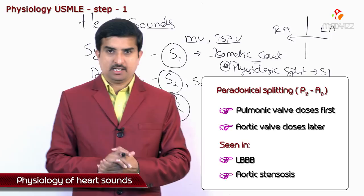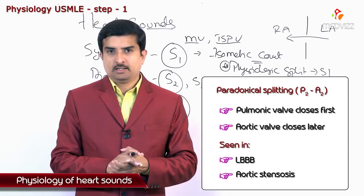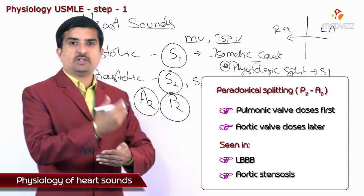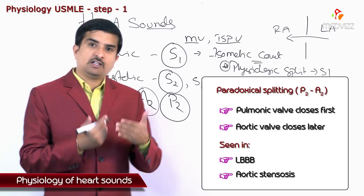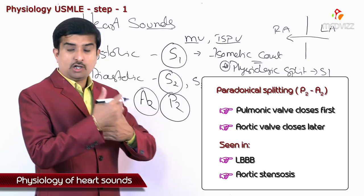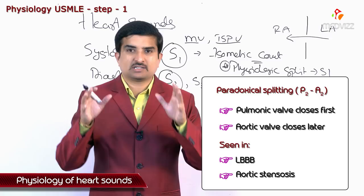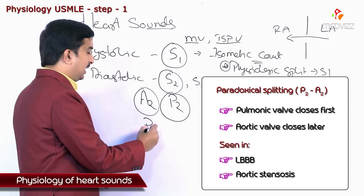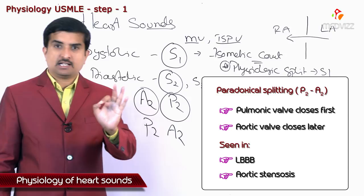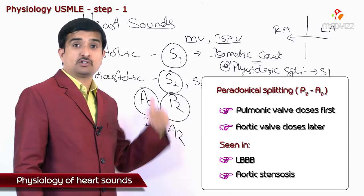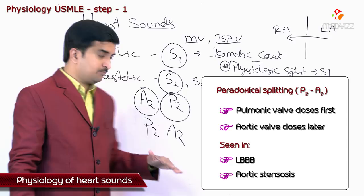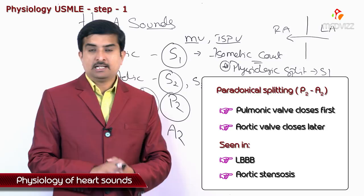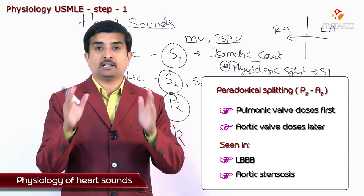In paradoxical splitting, the pulmonic valve closes first, then the aortic valve — this is a reversal of normal physiological closure, which is why it is called paradoxical splitting. We describe it as P2 then A2 rather than the normal A2 then P2. Under physiological conditions, A2 precedes P2 because the aortic valve is on the left side and closes first, but in paradoxical splitting the pulmonic valve closes first, followed by the aortic valve.